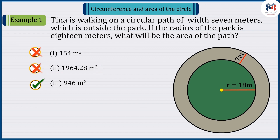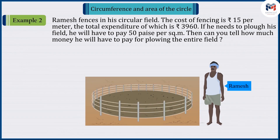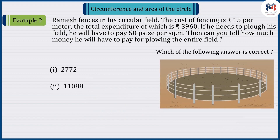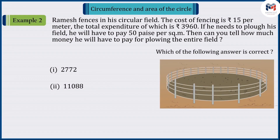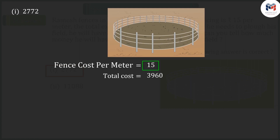Let's look at another example. Ramesh fences in his circular field. The cost of fencing is 15 rupees per meter, and the total expenditure is 3,960 rupees. If he needs to plough his field, he will have to pay 50 paise per square meter. Can you tell how much money he will have to pay for ploughing the entire field? Which of the following answers is correct? Pause the video to solve the question and then match your answer.